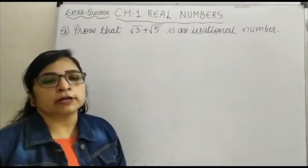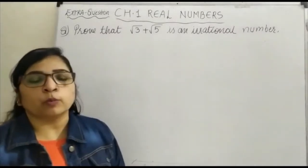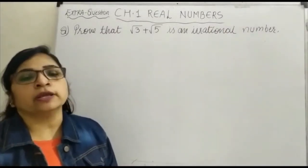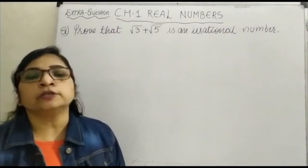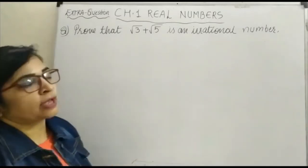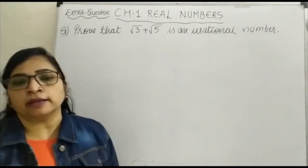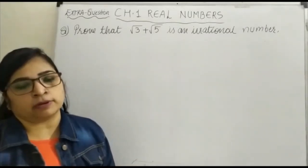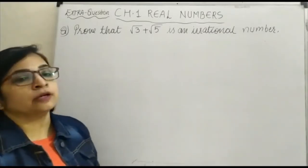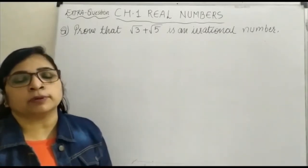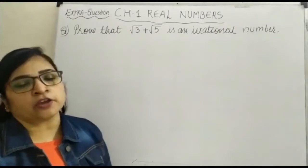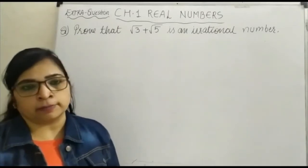Hello everyone, welcome to chapter number 1: Real Numbers. Today we are going to show how these numbers can be an irrational number. Our question is: prove that √3 + √5 is an irrational number.